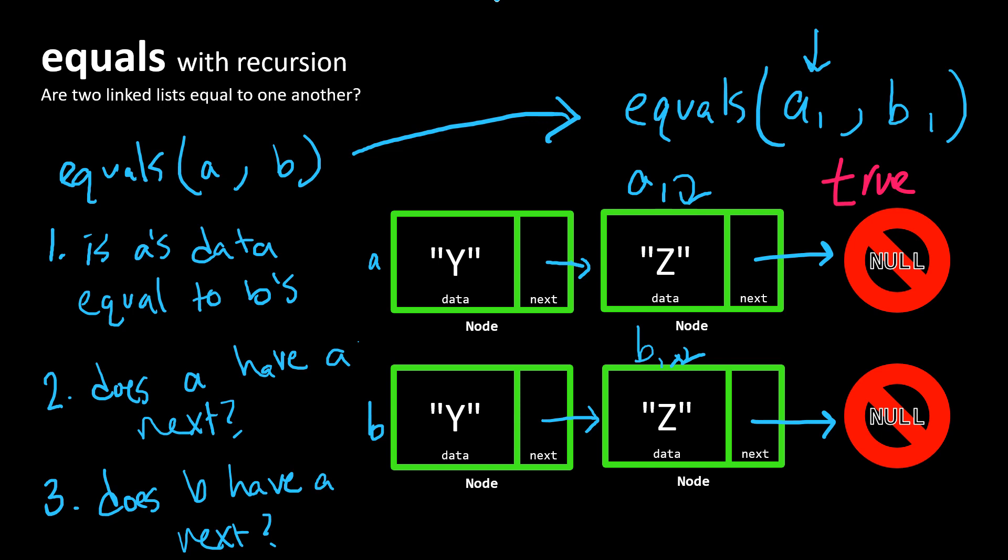Notice that's in this other notation, A1 and B1. But really in your code, you would write something along the lines of A dot next and B dot next. Those are referring to the rest of A and B.